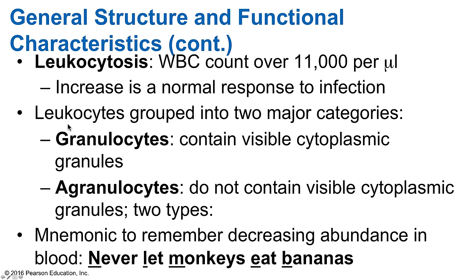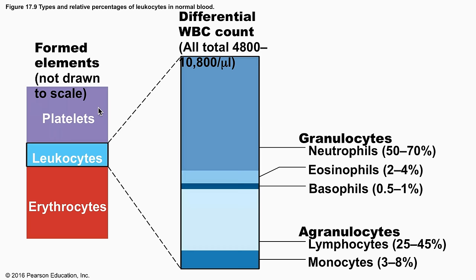Leukocytes are grouped into two major categories based on their appearance after staining blood and looking under the microscope. Some cells show visible granules in the cytoplasm and are called granulocytes, while cells lacking granules are called agranulocytes. There are two types of agranulocytes and three types of granulocytes. A mnemonic to remember the order from highest to lowest abundance is: Never Let Monkeys Eat Bananas — Neutrophils, Lymphocytes, Monocytes, Eosinophils, and Basophils.